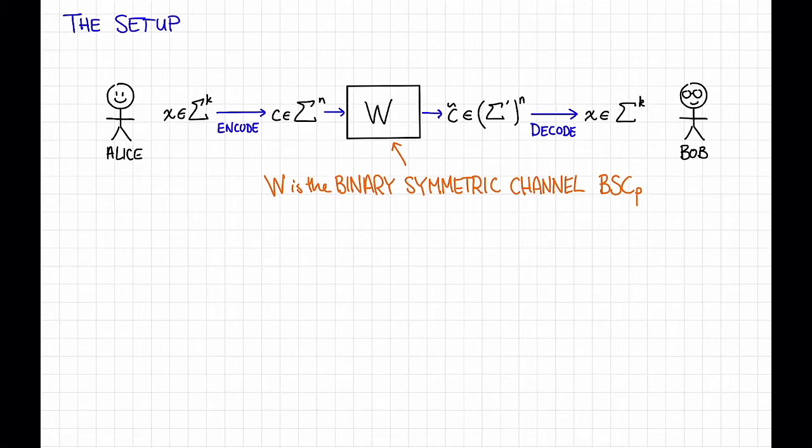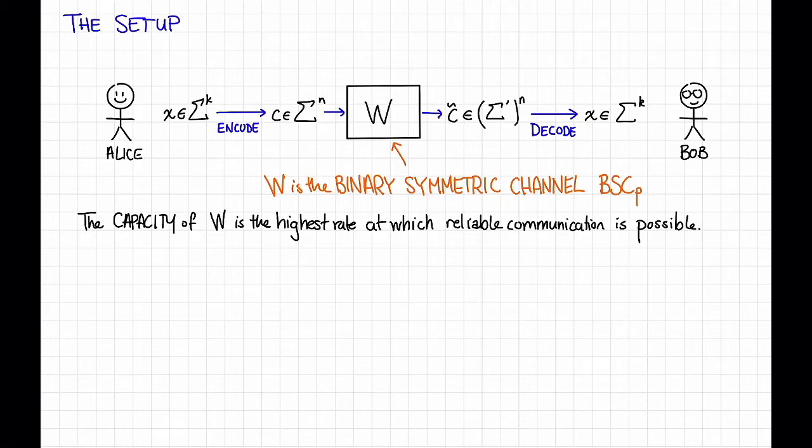In the previous video we informally defined the capacity of a channel. The capacity of a channel W is the highest rate at which reliable communication is possible. That is, if the rate is less than the capacity then the failure probability is going to go to zero, but if the rate is larger than the capacity then the failure probability is bounded away from zero.